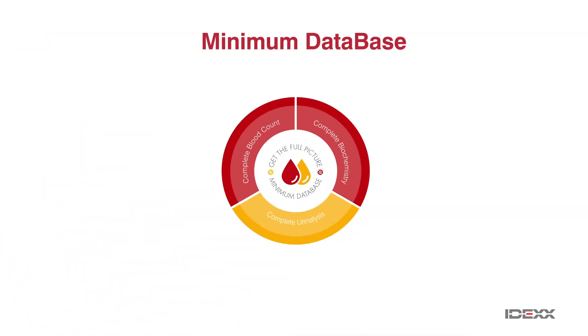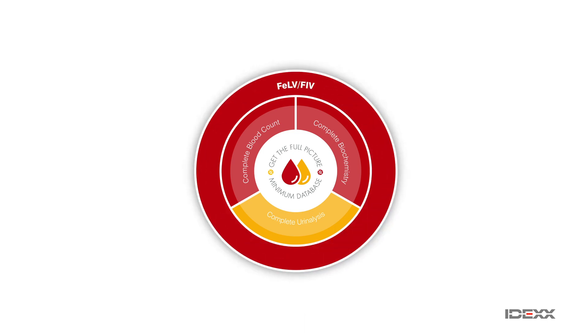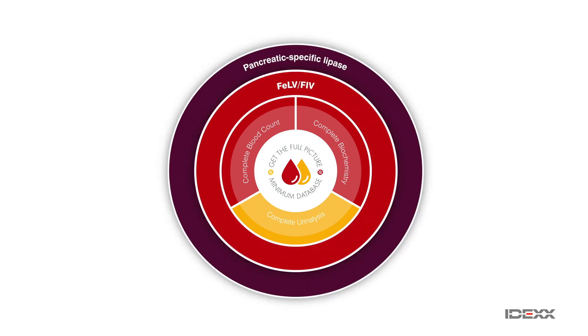Pancreatitis can present that way. And remember in cats that pancreatitis is often associated with concurrent liver and or intestinal disease. All of that could be presenting this way. One other thing: urine culture. So part of that initial workup would include CBC panel, urinalysis, FeLV-FIV, pancreatic-specific lipase, urine culture. Those three are the next tier.